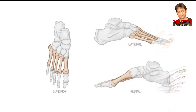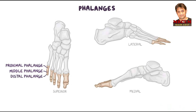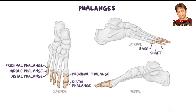Finally, there are 14 phalanges. Each toe except the first, or great toe, has a proximal, middle, and distal phalanx, while the first toe has only a proximal and distal phalanx. Each phalanx has a proximal base, a shaft, and a distal head.